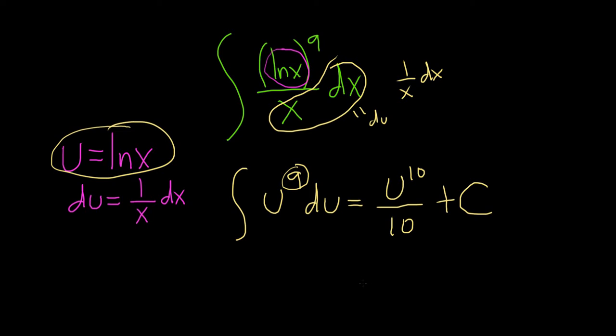The very last step is to replace u with the natural log of x. So this is ln of x, parentheses. Really important to put the parentheses here, all over 10 and then plus our capital C.